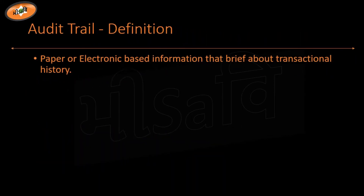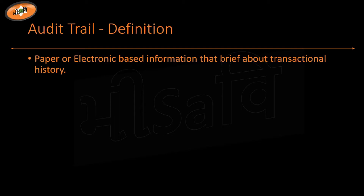Audit trail is paper or electronic based information that provides a brief about transactional history — my paper or PC based information that contains my whole transactional history of what I did.